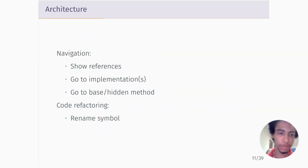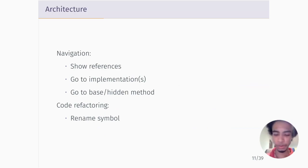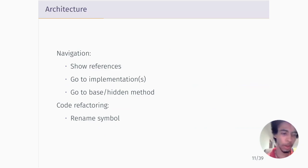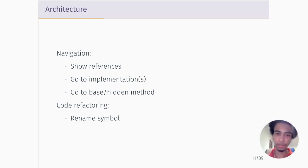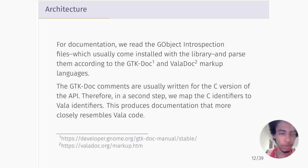For more basic things like navigation, you can search references, search for all symbols in your documents, go to implementation, go to hidden methods, and so on. We also have so far very basic code refactoring capabilities — you can rename a symbol and it works, but that's what we have so far.